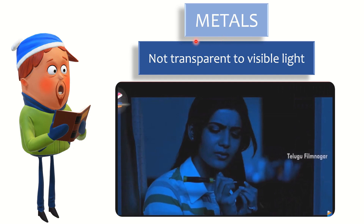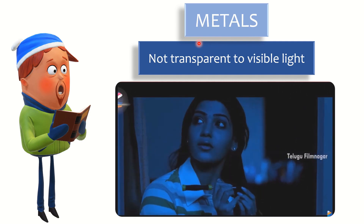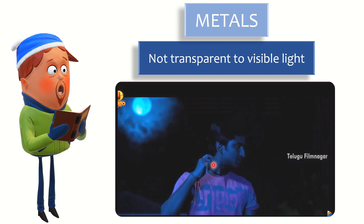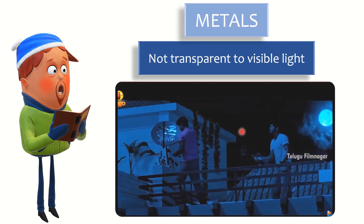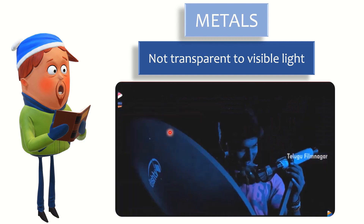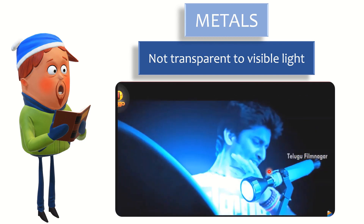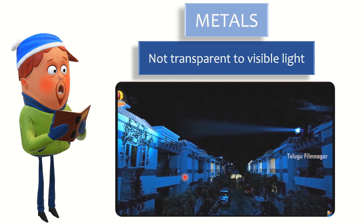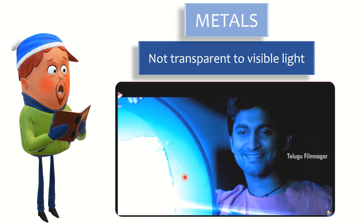Coming to transparency of visible light — metals are not transparent. When we put visible light to any metal, it will not transmit. As seen in this video, aluminum reflects the total light. So light cannot be transmitted through metals. Also, when we polish the metal material, light will be reflected.